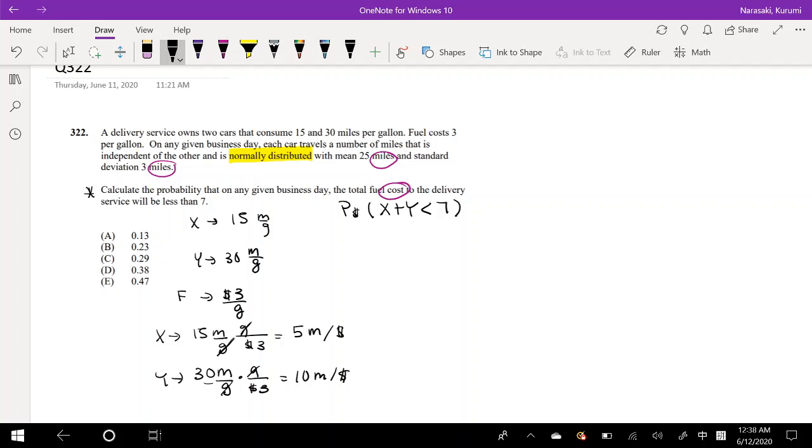We also know that the mean of x in terms of miles is equal to 25 miles, and we want to convert this into dollars. In terms of dollars, we would have to divide by 5 miles per dollar so we can cancel out the miles. So this ends up being 25 divided by 5, which is just $5.